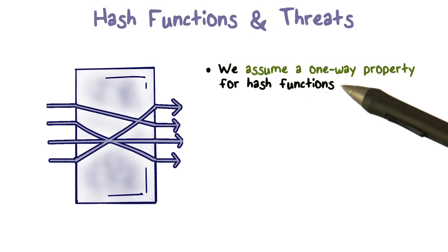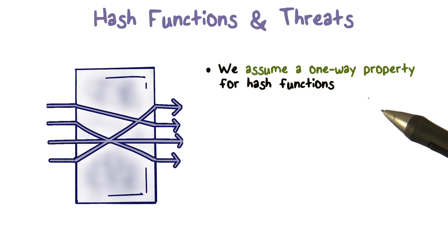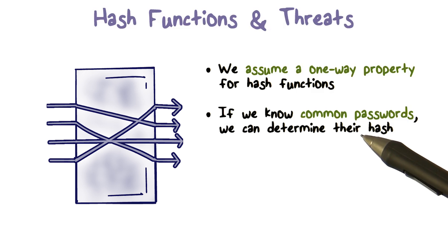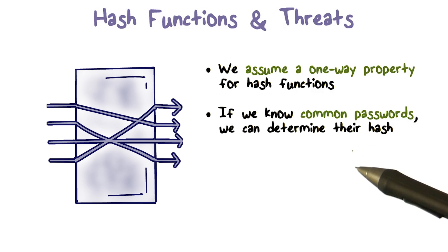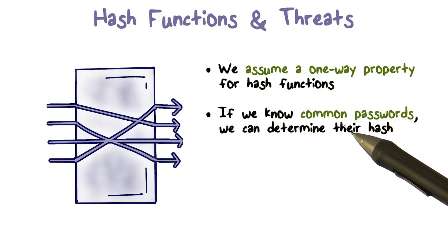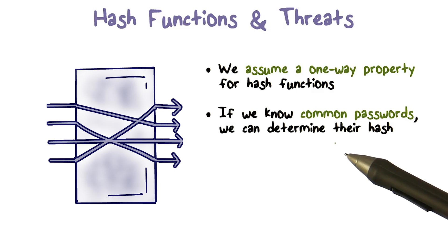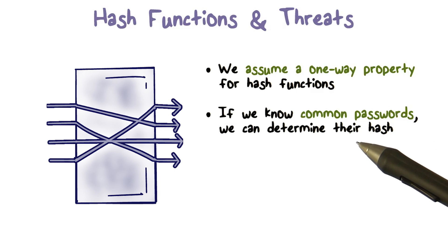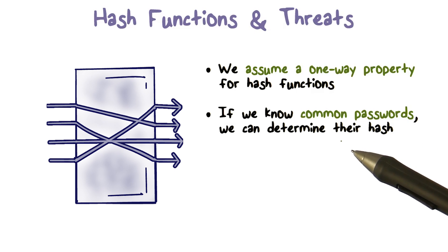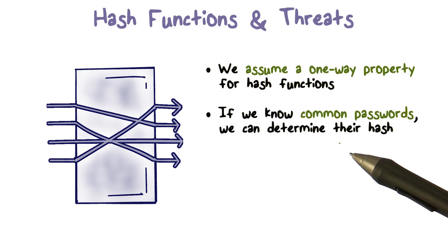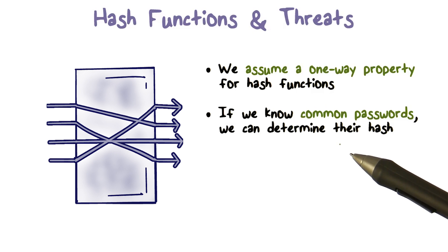What are some threats? We are going to assume that the one-way property of the hash functions holds — so inverting, going from a hash value back to a password, we're not going to worry about that. Let's say we are talking about common passwords. You know that 'password' is a common password, or '12345' is a common password. But this hash function is known — we're not doing security by obscurity. We can compute the hash values of the common passwords, and these hash values are stored by the system. If you can get hold of those hash values and find the hash values for the common passwords among them, it's not hard to see how we can find out passwords of certain users.